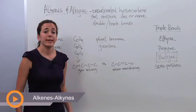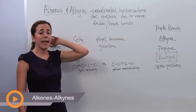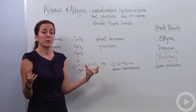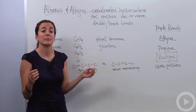Alright, so we're going to talk about alkenes and alkynes. We know that alkanes are all singly bonded to each other and they're all saturated with the most amount of hydrogens that it could possibly have.